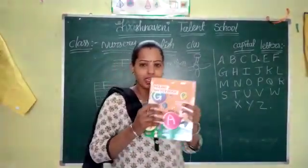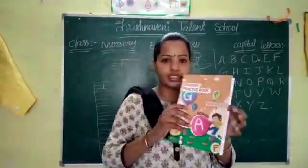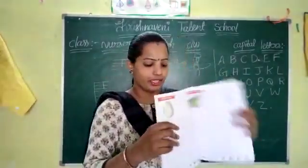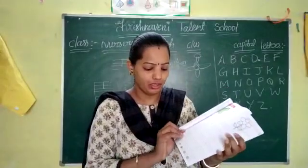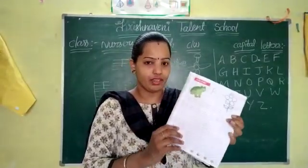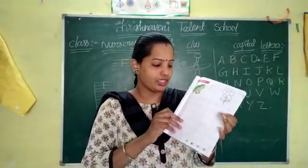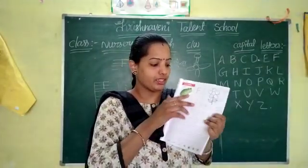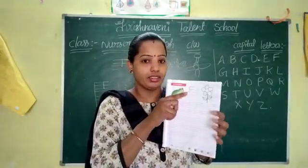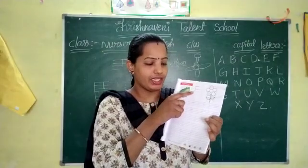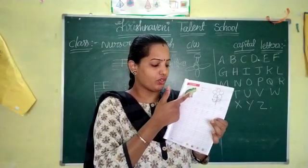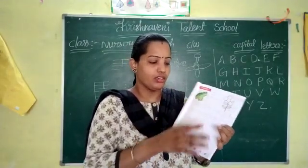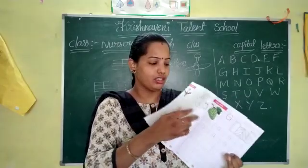Take out your English practice book and open page number 37. Open page number 37. What is there here? The letter F is there. F for frog, F for flower.